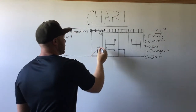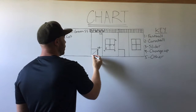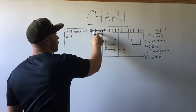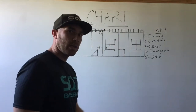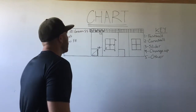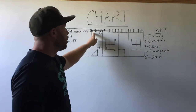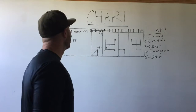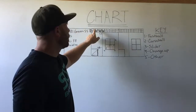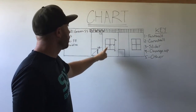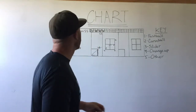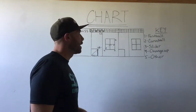Al Green comes up and hits a double to center field, so we chart Al Green: double. We threw him three fastballs for strikes and he swung at all three of them, so he likes fastballs. We threw him a breaking ball 0-0, which means he took it for a strike — he's going to be a disciplined hitter. He looked at borderline pitches, so he has a good eye.